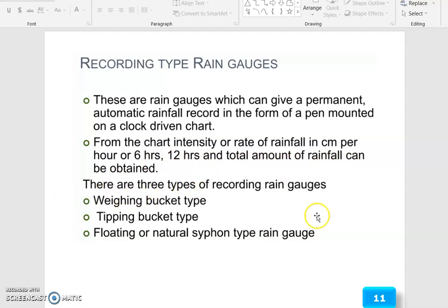There are three types of recording rain gauges. One is weighing bucket type. Second, tipping bucket type. Third, floating or natural siphon type rain gauge.